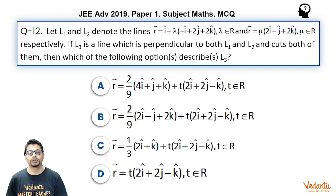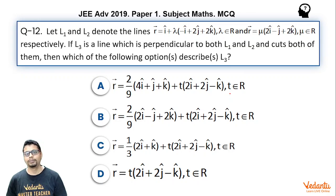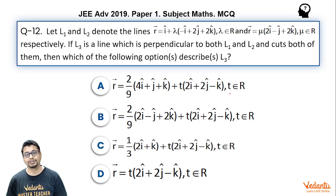Let L1 and L2 denote the lines: R vector equal to i-cap plus lambda times (minus i-cap plus 2 j-cap plus 2 k-cap), where lambda can be any real value; and R vector equal to mu times (2 i-cap minus j-cap plus 2 k-cap), where mu can be any real value respectively. If L3 is a line which is perpendicular to both L1 and L2 and cuts both of them, then which of the following options describe line L3? There are four options and this is a multiple correct type question.